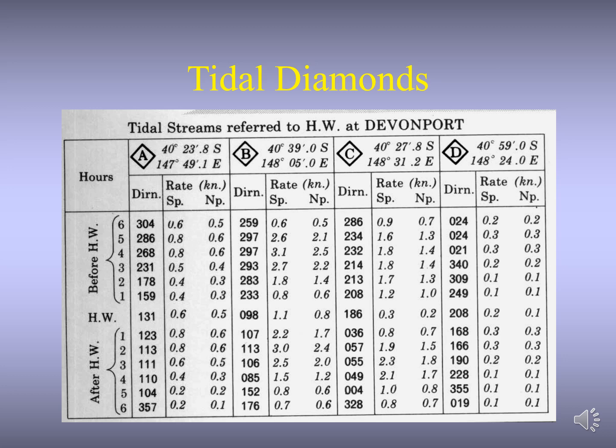The times on the table are related to the high water of the standard port or the reference port. There are secondary ports which are smaller ports, and they are normally referenced to the standard port — the closest bigger port relative to the secondary port. There can also be a low water slack water before flooding, and a high water slack water before ebbing, when the tidal flow turns and changes direction.